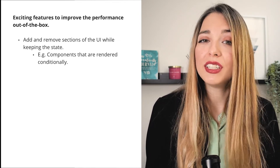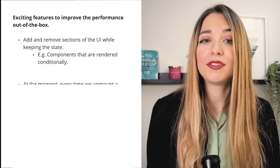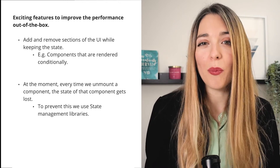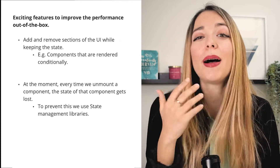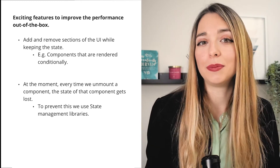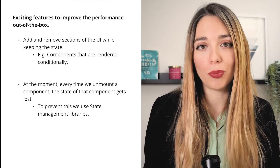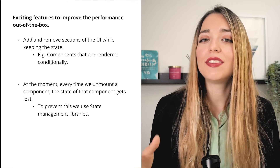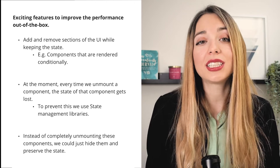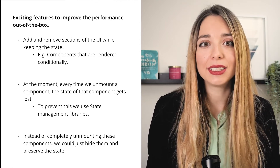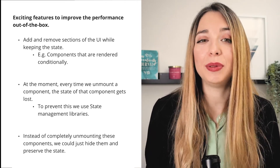This is going to be really beneficial for components that render conditionally — like if we have tabs. At the moment, every time we unmount a component, the state of that component gets lost. The only way to prevent this is by using state management libraries like Redux, or using useContext or higher-order components. So what React wants is to give us a way where instead of completely unmounting these components, we could just hide them and preserve the state, mounting and remounting trees using the same component state as before.